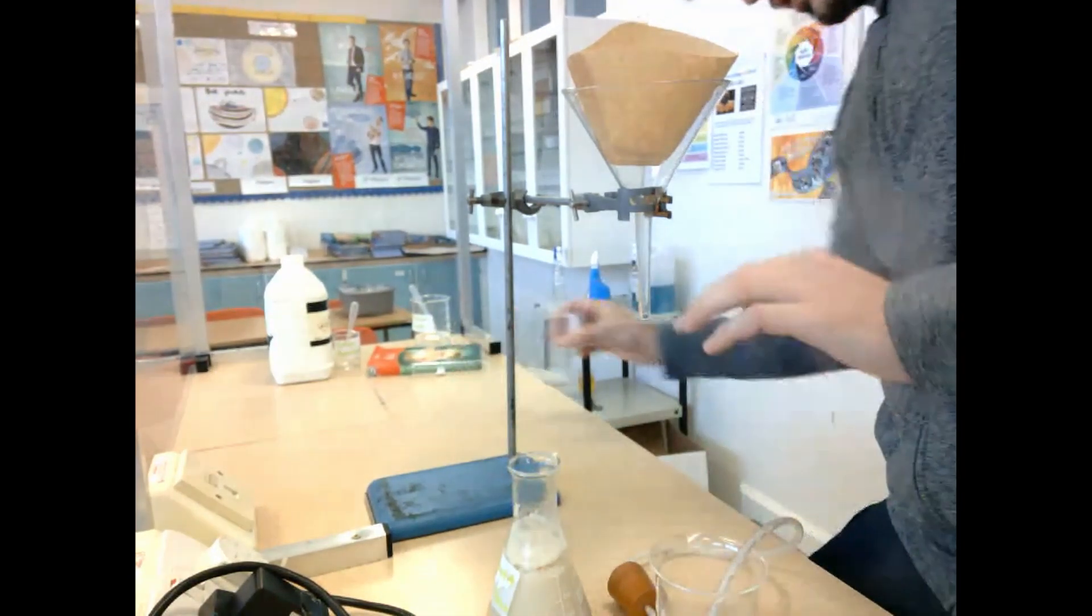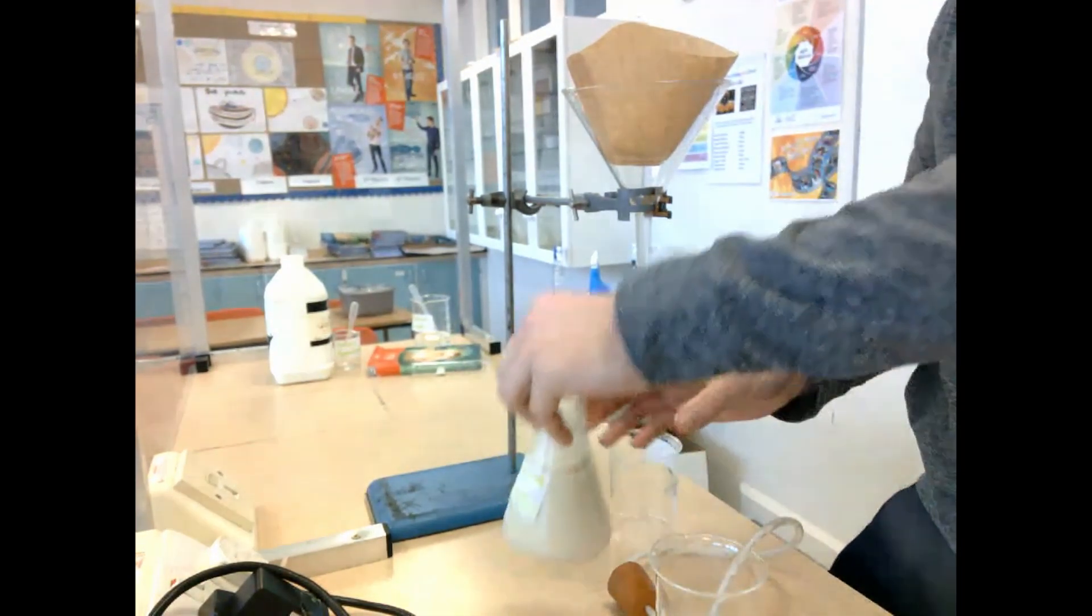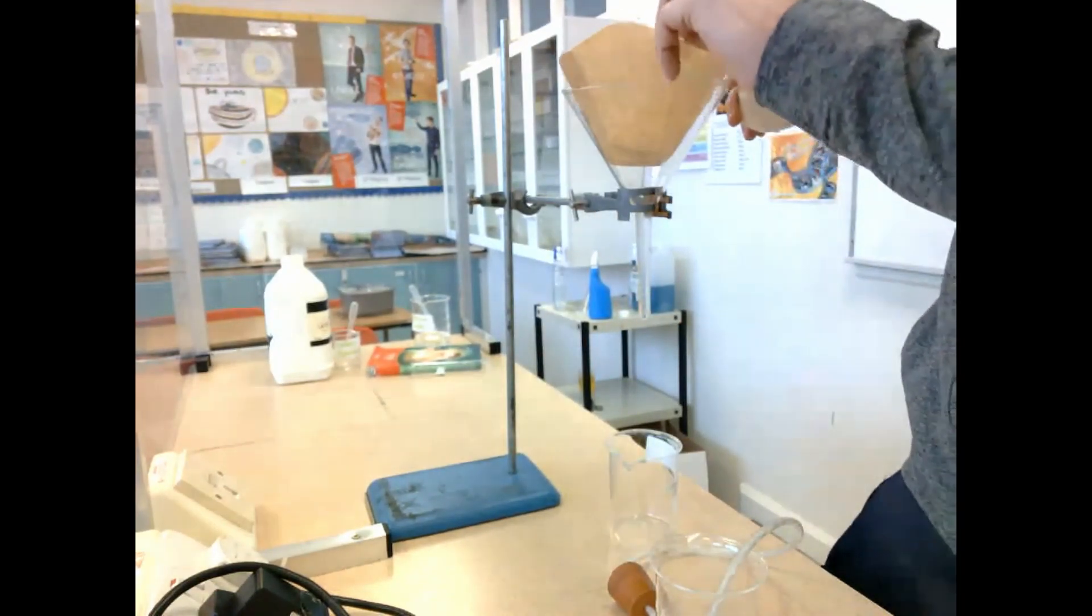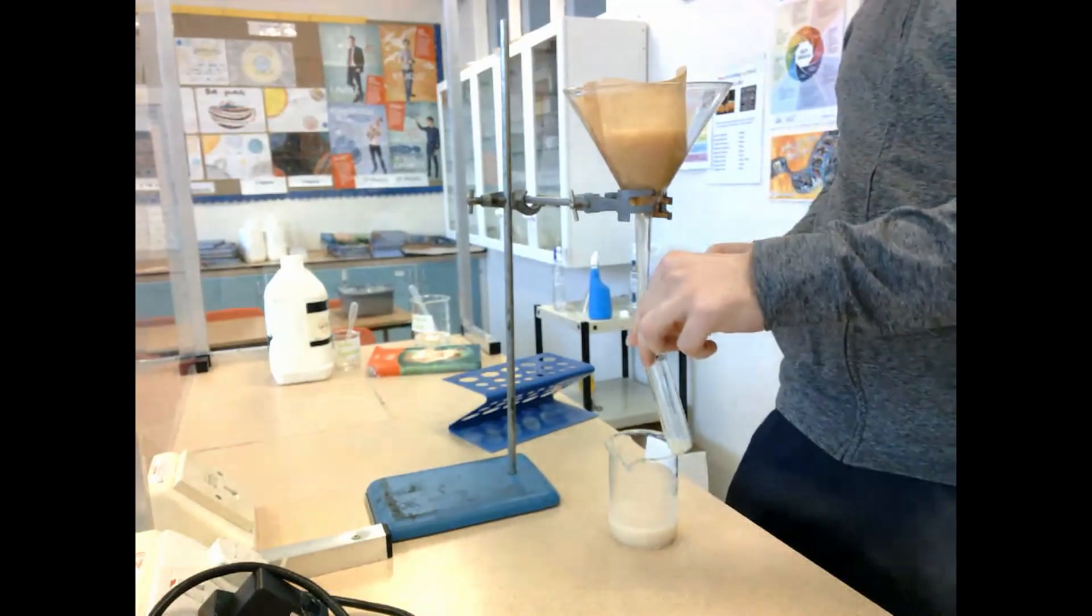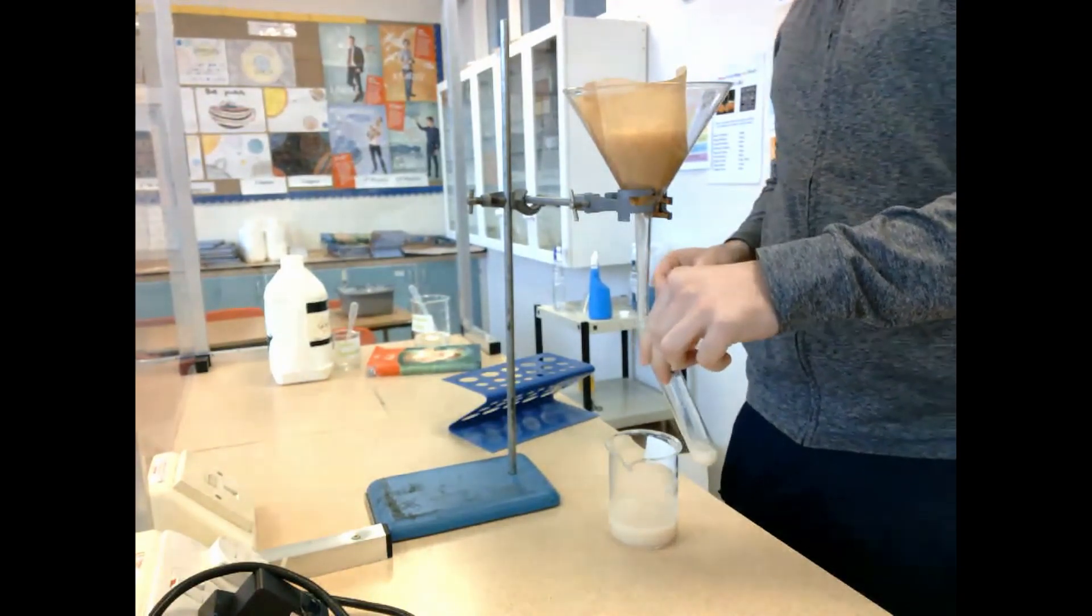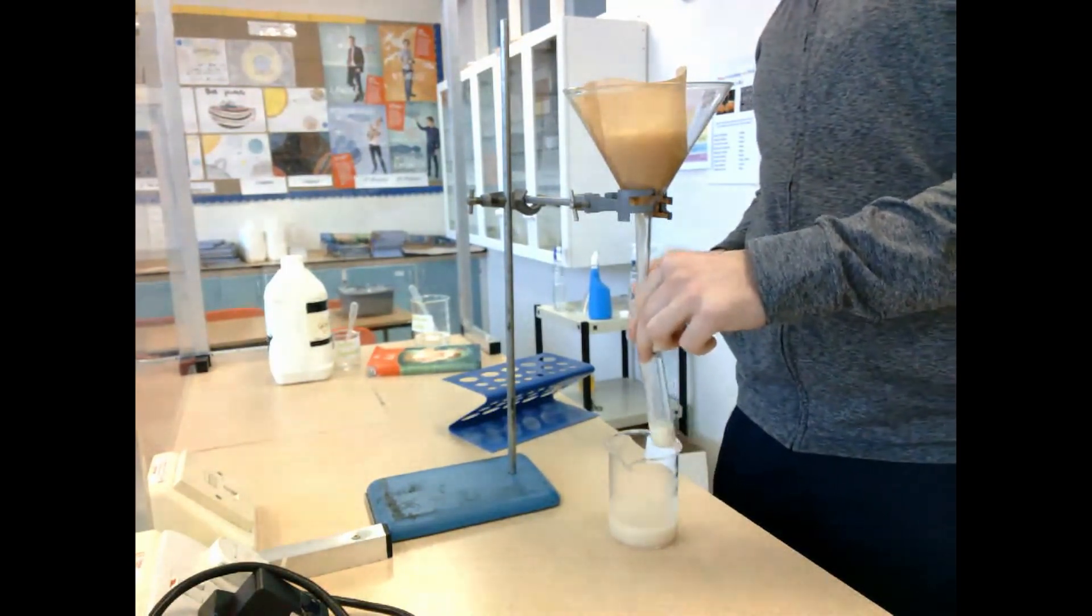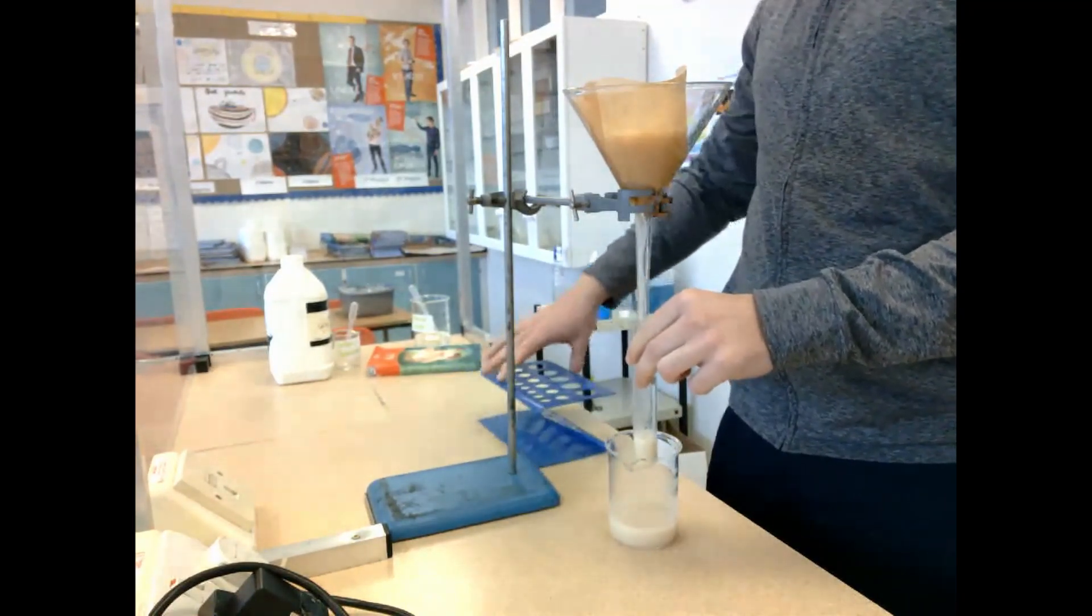Now the next step is let's see if ethanol was also being produced. To do this, we have to filter the solution. We take our conical flask and add it to the coffee filter paper, and this will remove any solid mass within the solution.